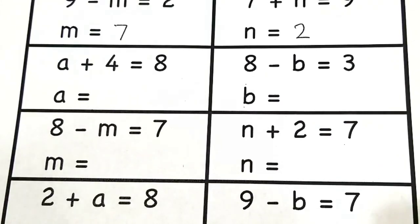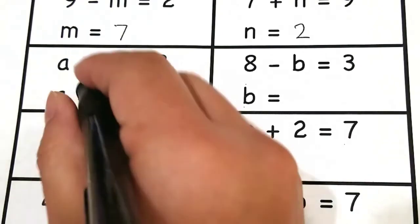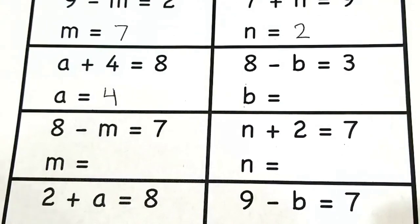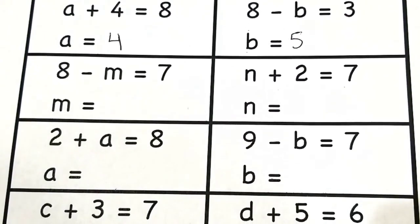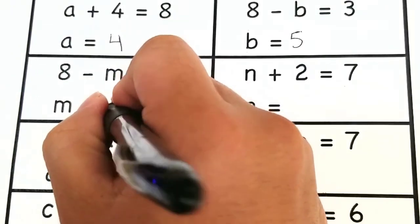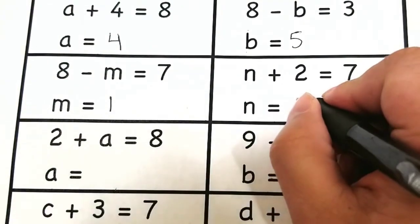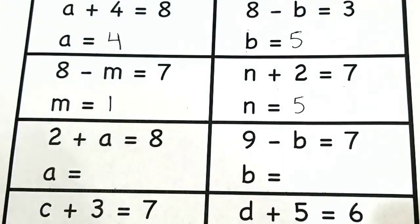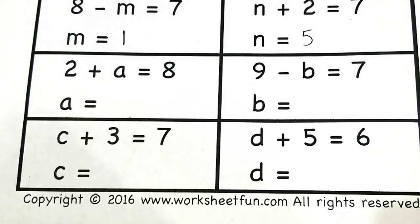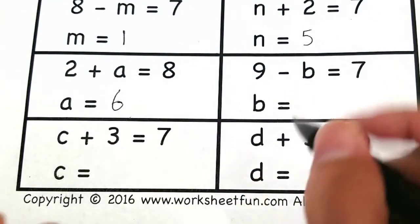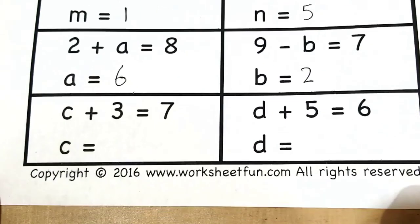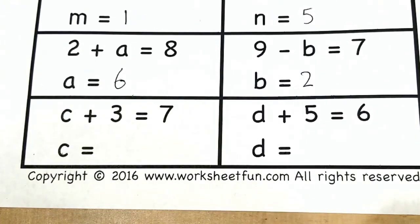Are you doing good so far? A plus four equals eight — A will be four, since four plus four equals eight. Eight minus five will give us three. Eight minus one will give us seven. N would be five, since five plus two gives us seven. Two plus six gives us eight. Nine minus two gives us seven. C plus three: four plus three gives us seven. And one plus five gives us six.